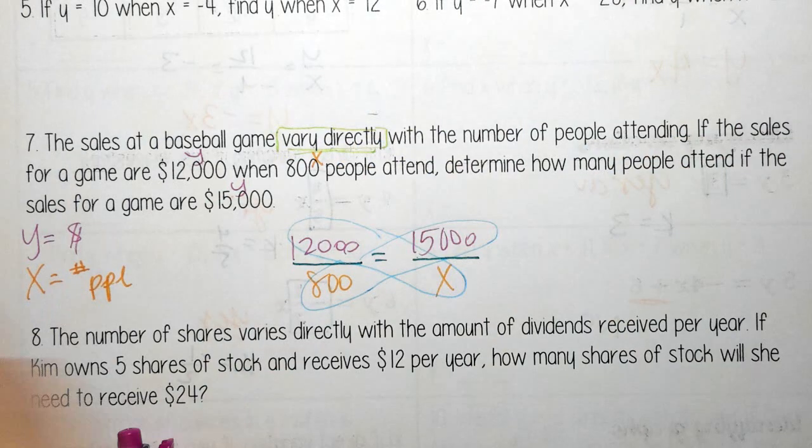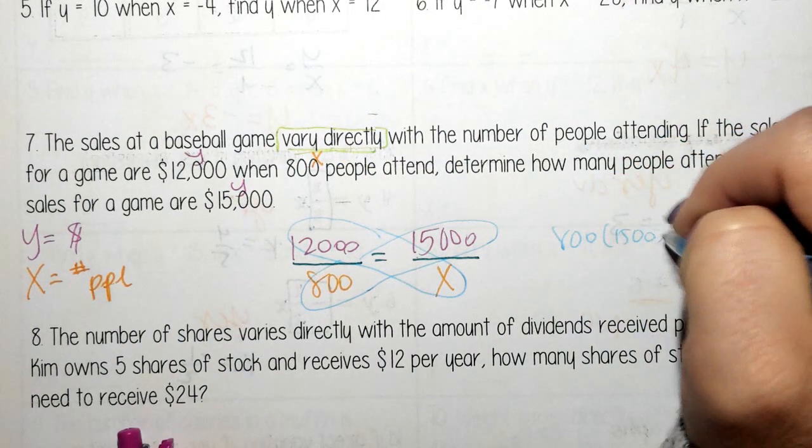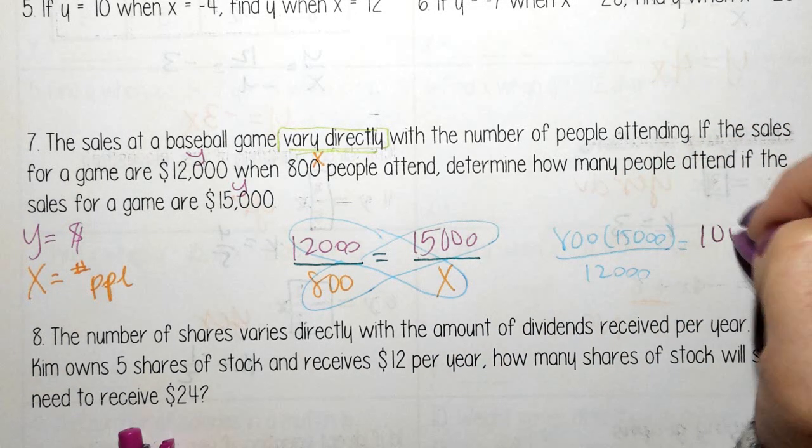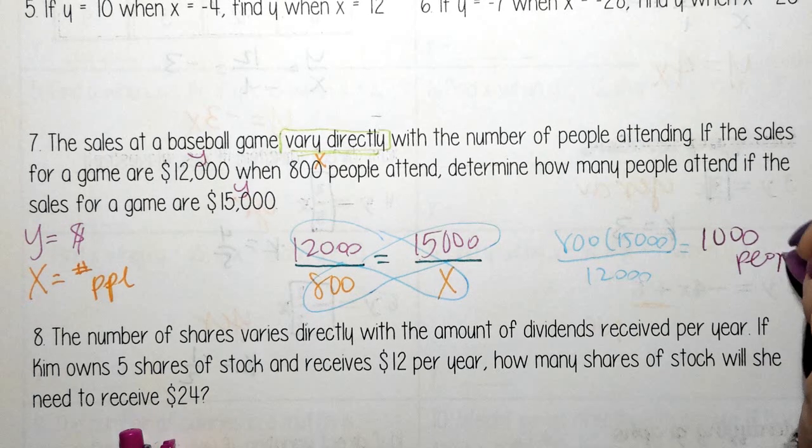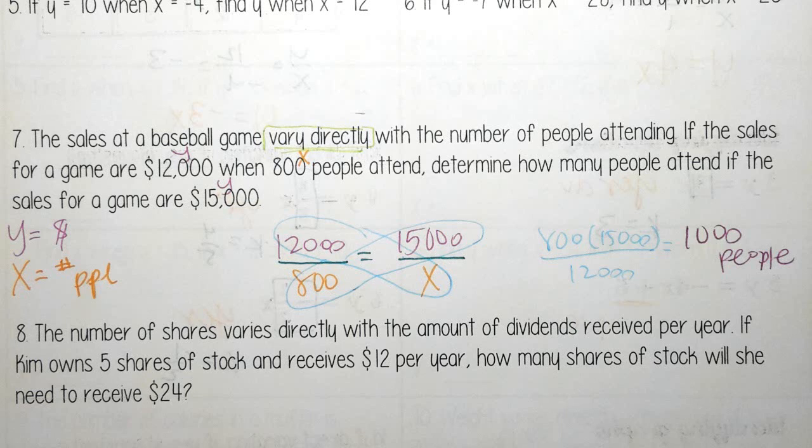So I'm going to multiply 800 times $15,000 divided by $12,000. And when I do that, I get 1,000. So 1,000 people would need to attend in order to make $15,000.